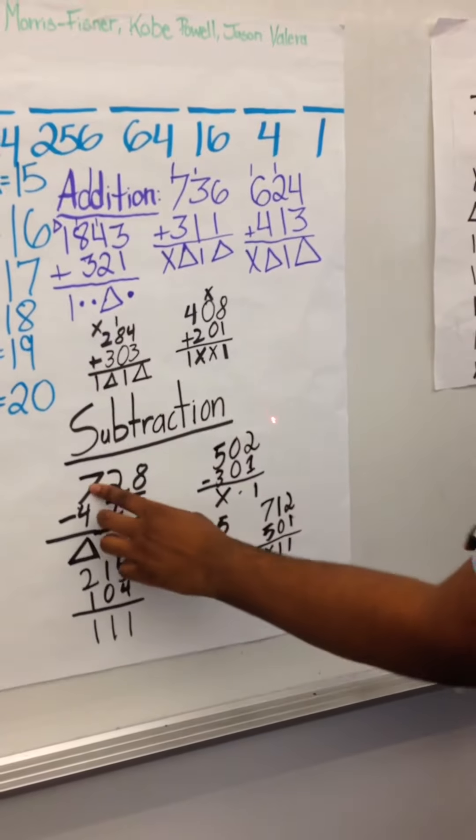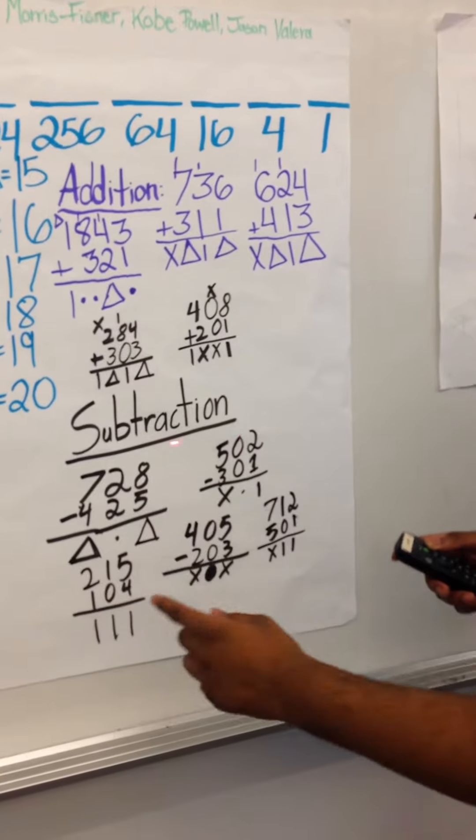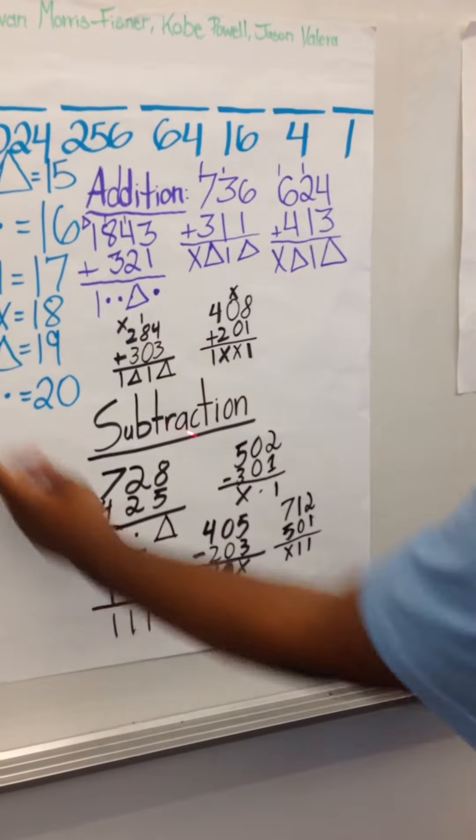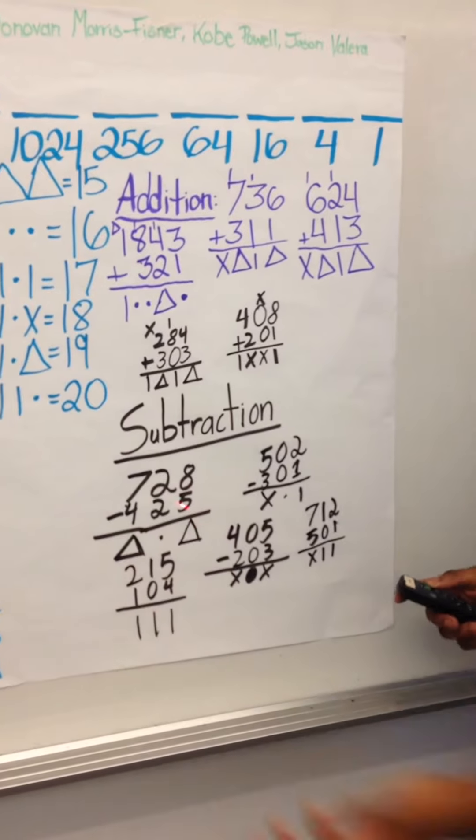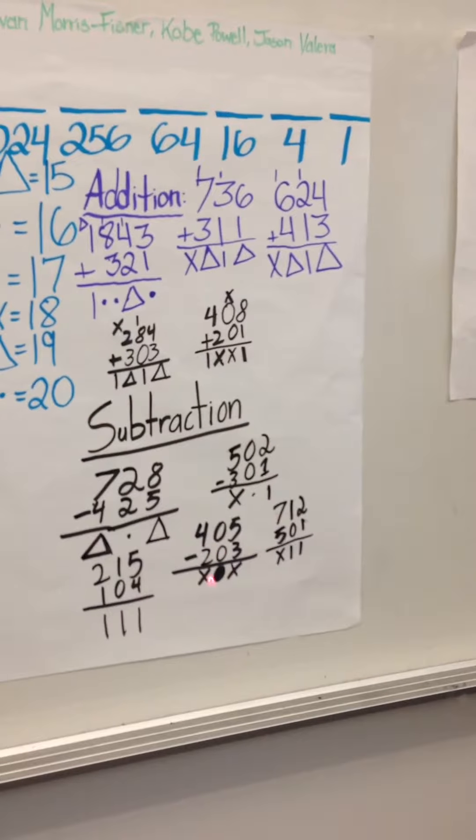Same for subtraction. Seven twenty-eight minus four twenty-five. Three, triangle right here. Two, that's a dot, zero. That's three, three, full set.